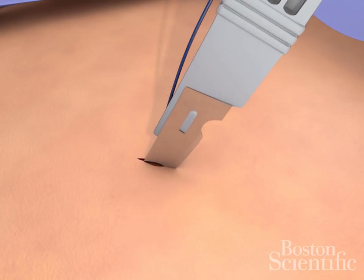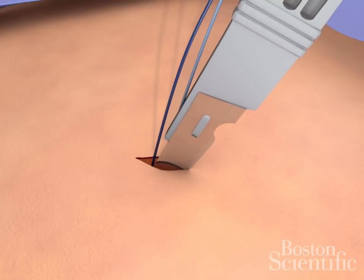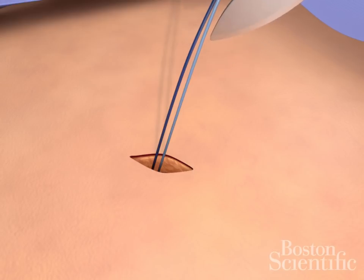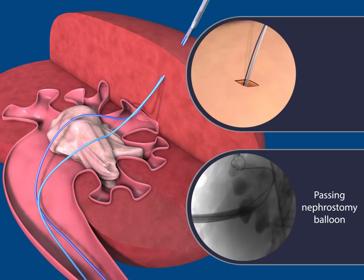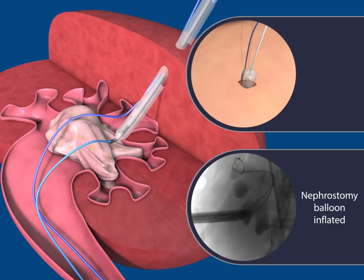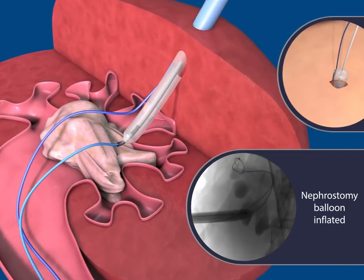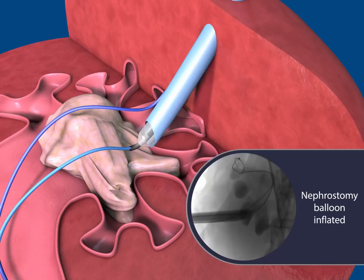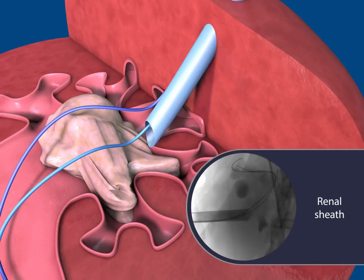Incise the skin in the back through the connective tissue in order to widen the existing puncture. Slide the balloon catheter over the stiff wire up to the stone. Inflate the balloon to the appropriate pressure. Slowly insert the renal sheath, twisting clockwise and counterclockwise until reaching the stone. Deflate and remove the balloon catheter. Both wires remain in place.